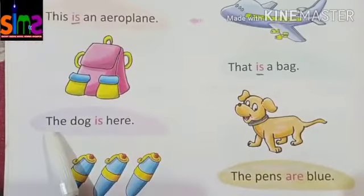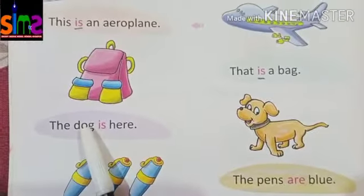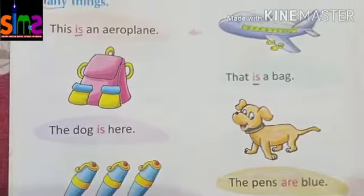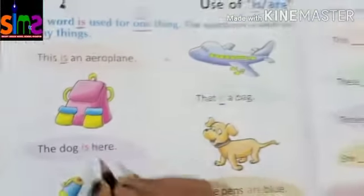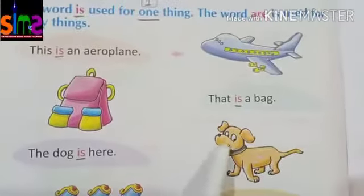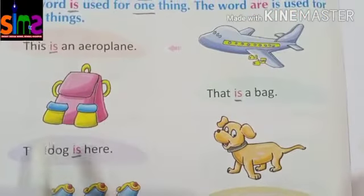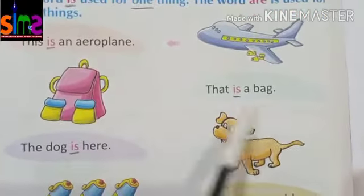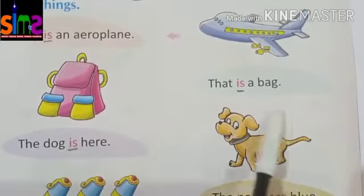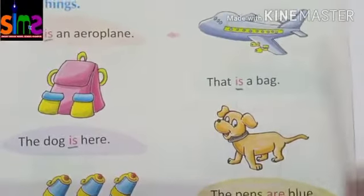Okay kids, now let's read: T-H-E, the. D-O-G, dog. I-S, is. H-E-R-E, here. Kids, we have used 'is' here because there is only one dog. 'The dog is here.' We use 'is' for only one thing.